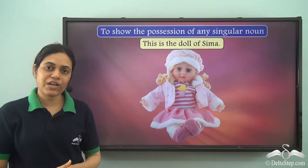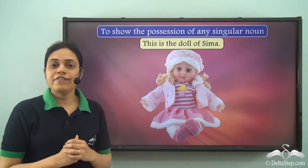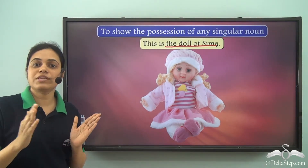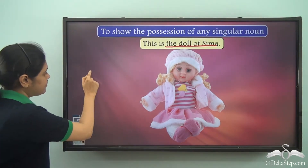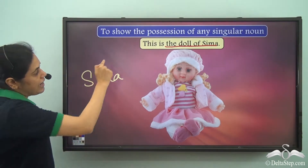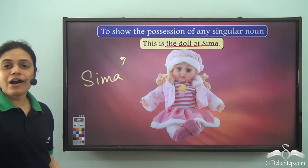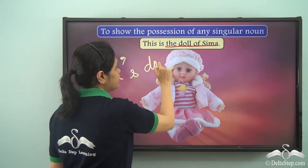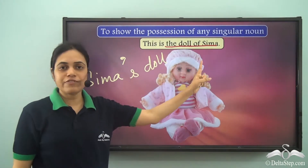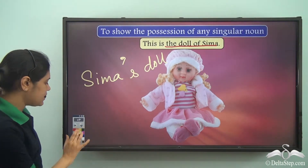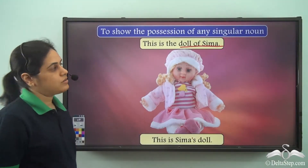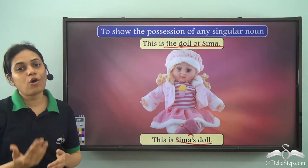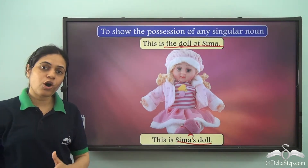Let us see how we can rewrite this sentence using apostrophe: 'This is the doll of Sima.' Sima is the person who possesses or owns the doll. So I will attach a hook after Sima — Sima's — and what does Sima own? Doll. So 'the doll of Sima' is replaced by 'Sima's doll'. This is Sima's doll. The apostrophe is used to show belonging or possession — the doll belongs to Sima.